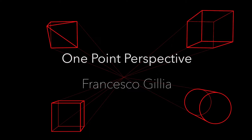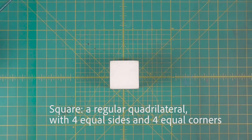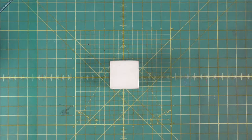To visualize the concept of one-point perspective, let's take a look at this square. In geometry, a square is a regular quadrilateral that has four equal sides and four equal corners. The faint cast shadows on its sides are enough for your brain to feel that there is something more to this shape.